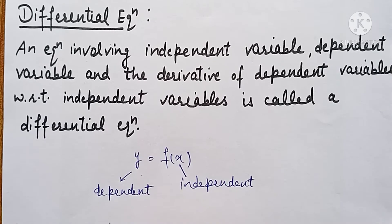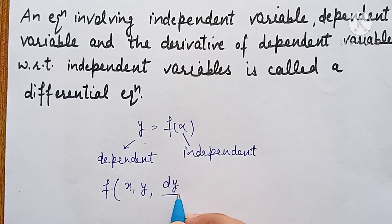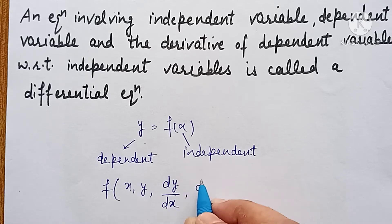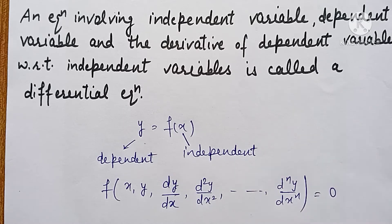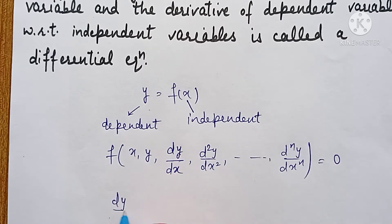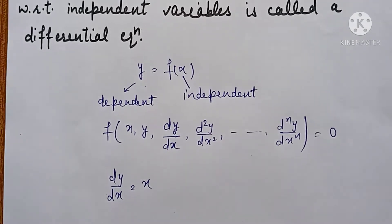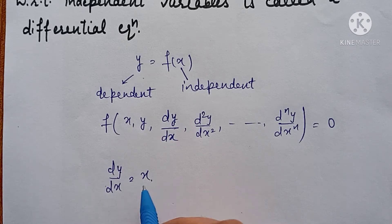If we get an expression of this kind, where there is one independent variable, dependent variable y, and derivative of dependent variable with respect to independent variable — that means derivative of y with respect to x, double derivative of y with respect to x, up to nth derivative of y with respect to x — this kind of equation is called a differential equation. For example, the equation dy/dx = x is a differential equation because here the derivative of dependent variable y, dy/dx, is equal to x.